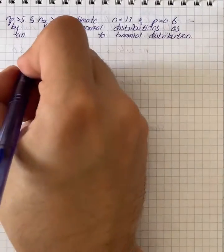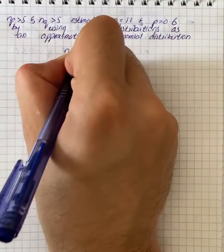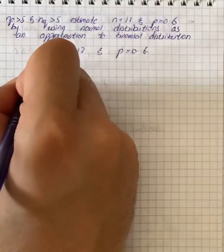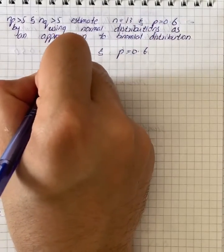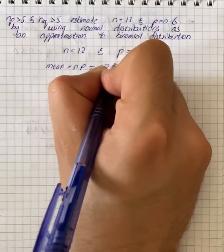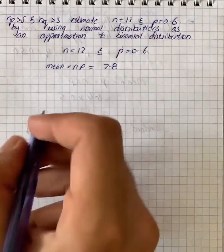So here we actually have given n equals 12 and p is equal to 0.6. So we know that mean is equal to n p, that is equal to 7.8. Now the standard deviation.